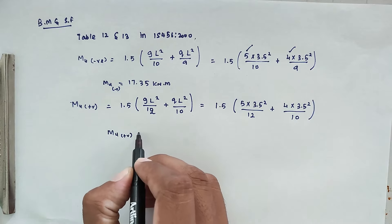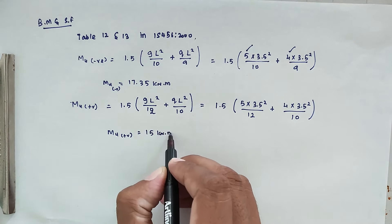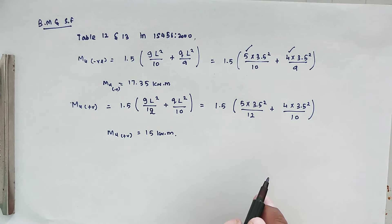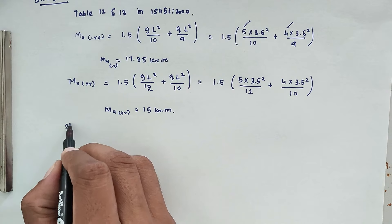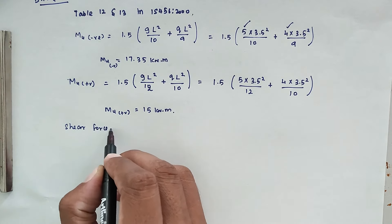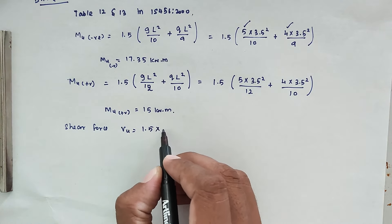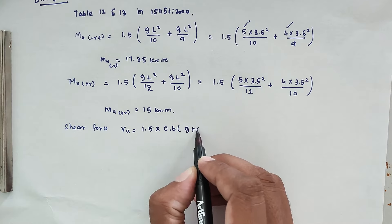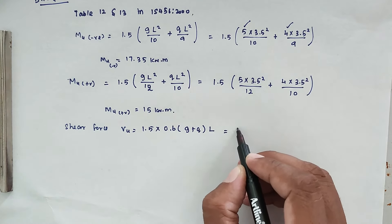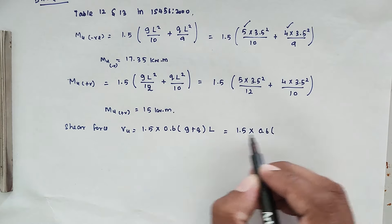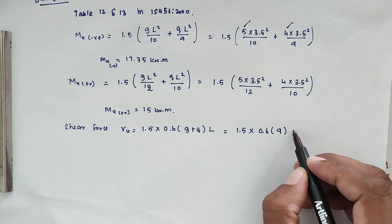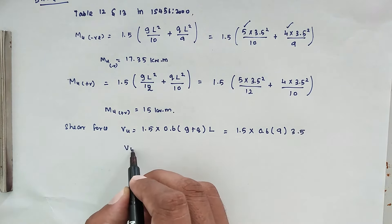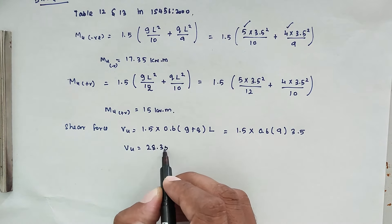Solving, Mu negative equals 17.35 kN·m. For Mu positive, the formula is 1.5 into [g × L² / 12 + q × L² / 10]. Substituting: 1.5 into [5 × 3.5² / 12 + 4 × 3.5² / 10], giving Mu positive equals 15 kN·m. Maximum shear force: Vu equals 1.5 into 0.6 into (g + q) into L, that is 1.5 × 0.6 × 9 × 3.5, giving Vu equals 28.35 kN.